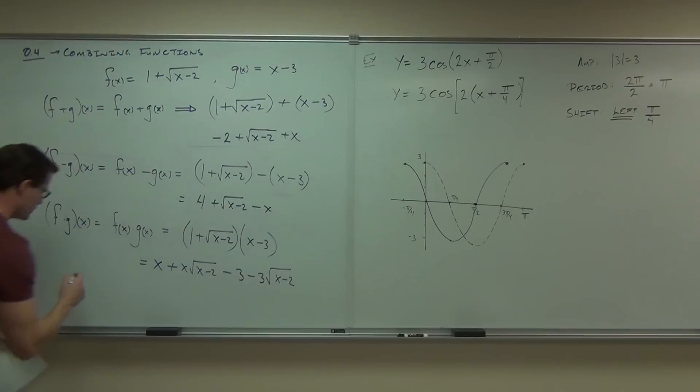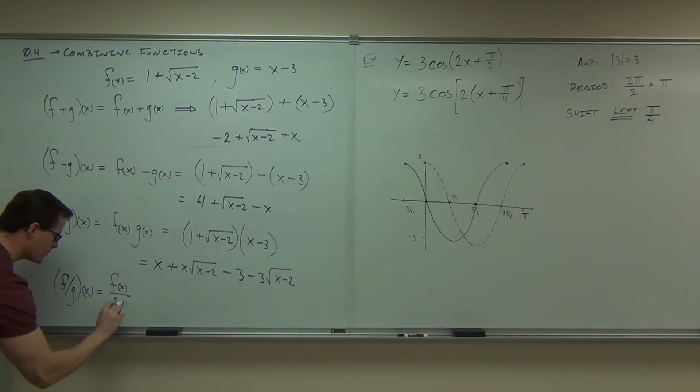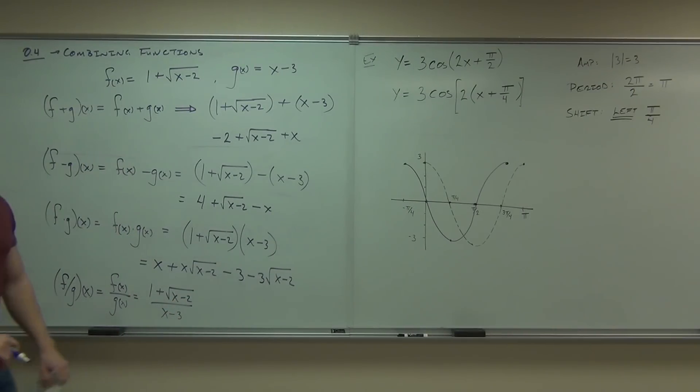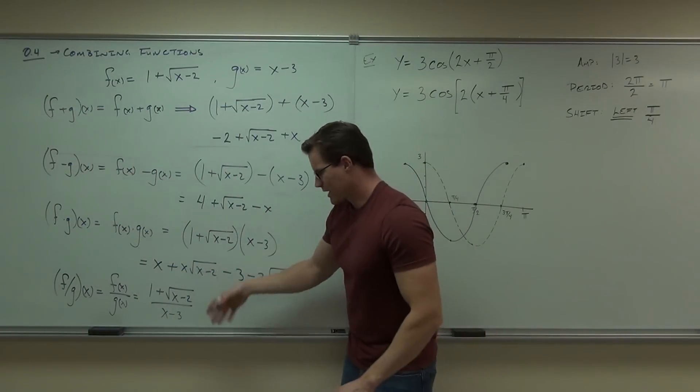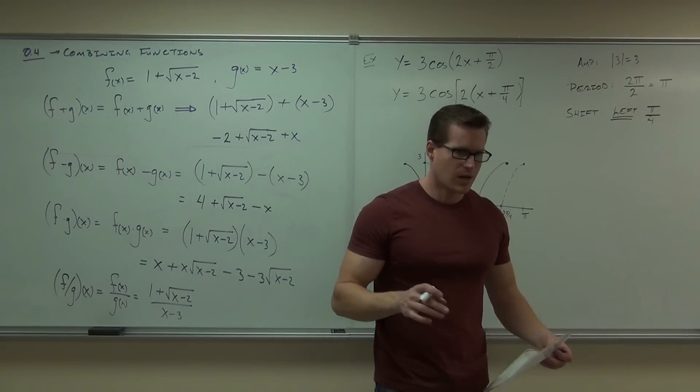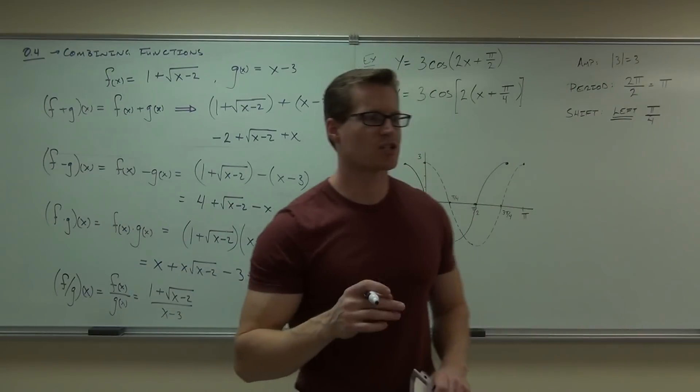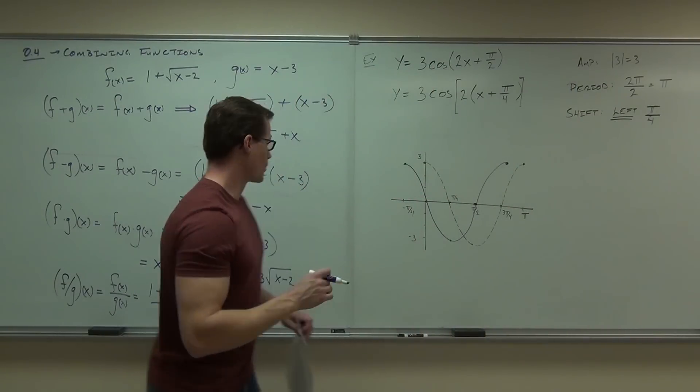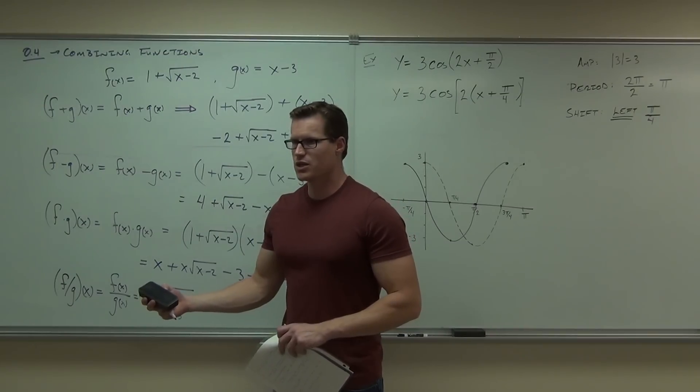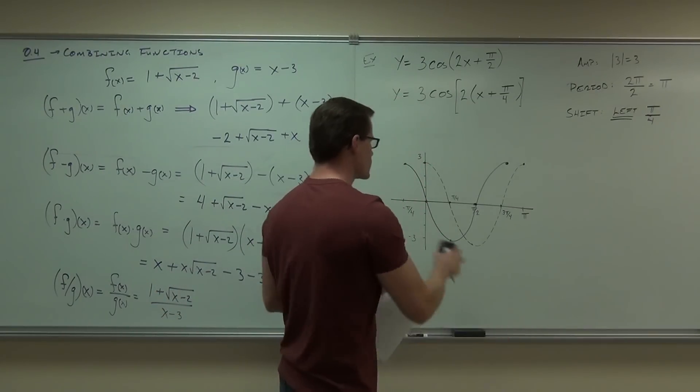The only thing we can do with our basic operations is f over g of x. In this case, we just put one function over the other in the appropriate order and make sure we have a new domain restriction. In our case right here, you knew that x could not be equal to 3. Also, one note that I do need to make, when you're doing these functions and they're asking you to find the domain, I'll write this out for you. The domain is the intersection of the domains of the original functions. You can't ever get rid of domain problems. All you can do is make more of them.